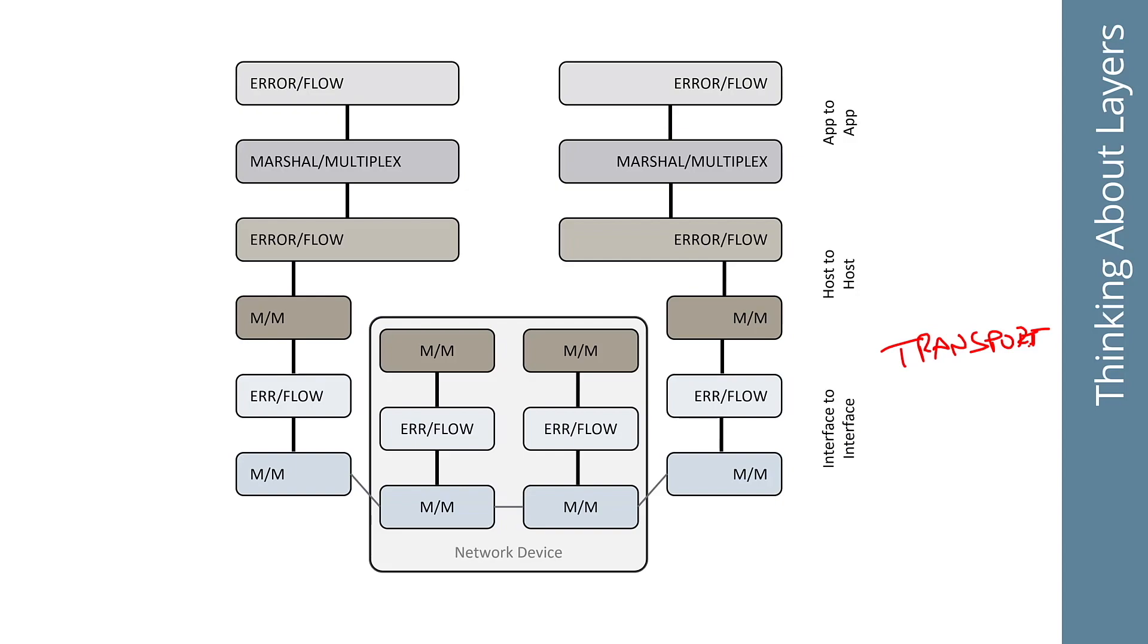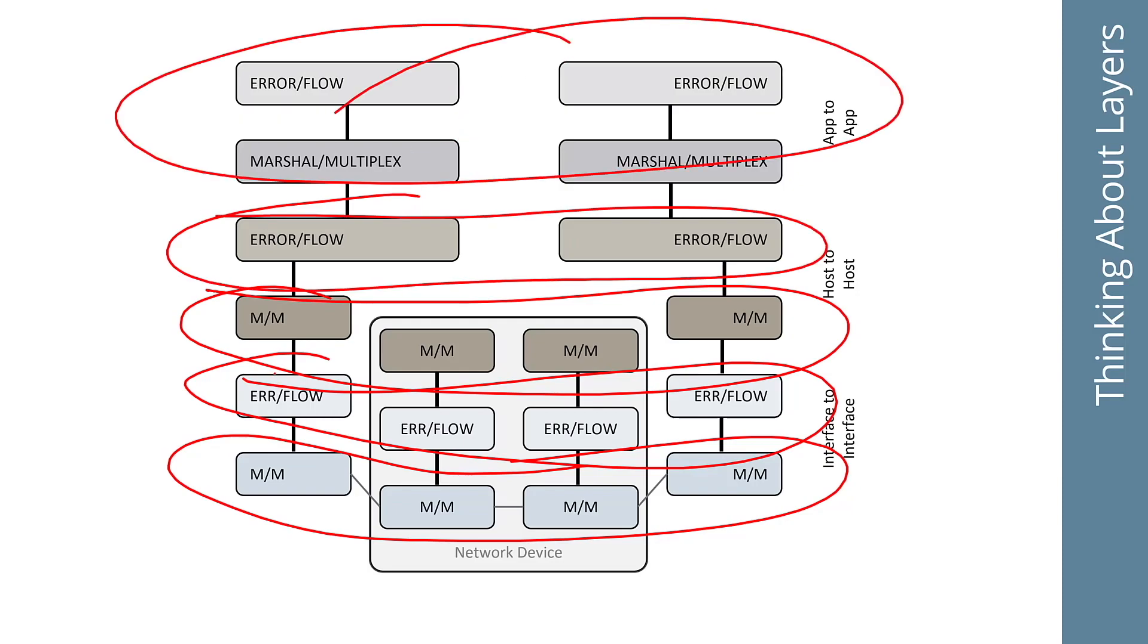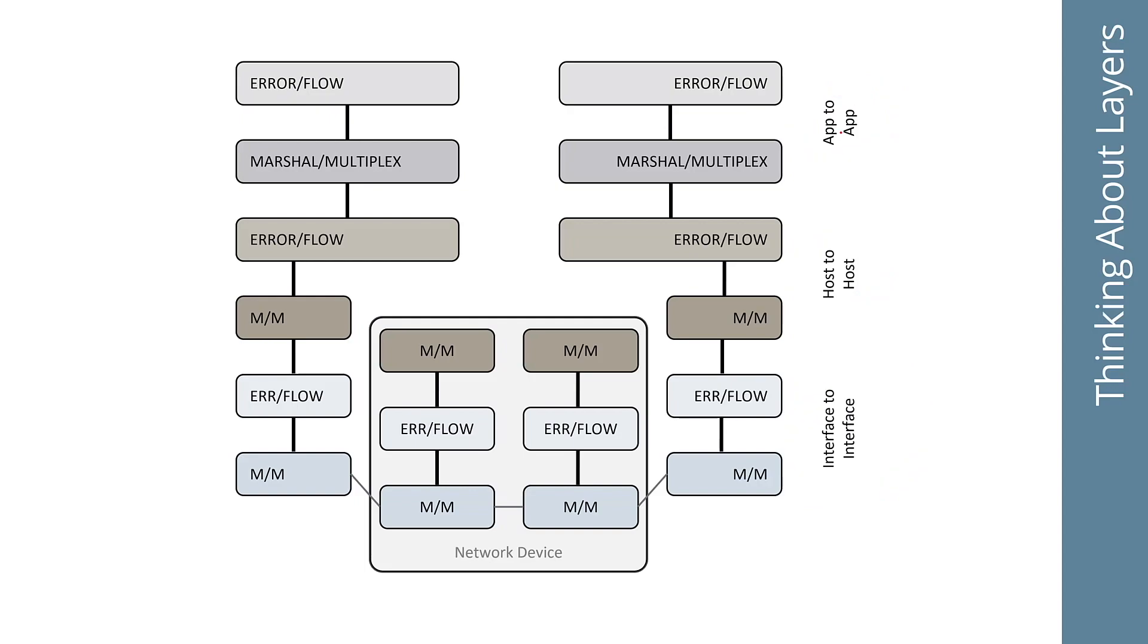What I'm doing is I'm thinking about how to layer my network transport. So I have marshalling and multiplexing, error and flow control. And so I have one layer that has marshalling and multiplexing, and it has error and flow control. I have a second layer that has marshalling and multiplexing, error and flow control. I have a third layer, and these are in different places. I have an interface to interface, which would be across Ethernet, host to host, which would be IP, and app to app, which would be perhaps HTML or something like that. So I have these modules. So this kind of suggests another way of layering for network design.